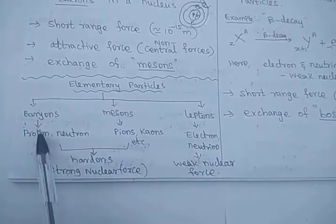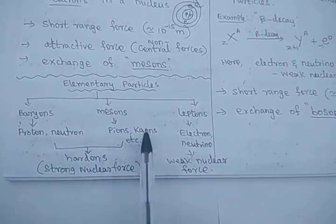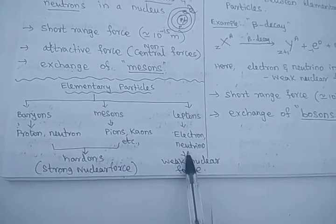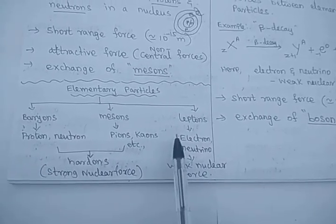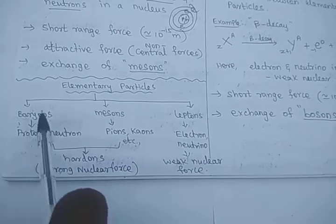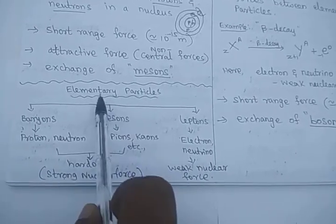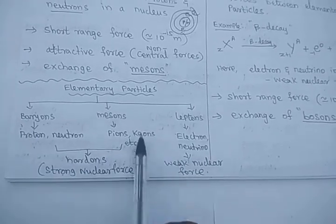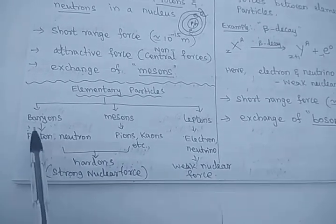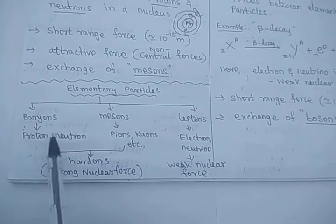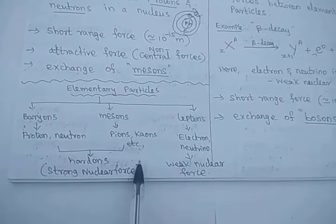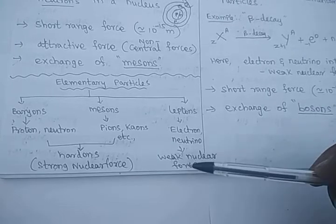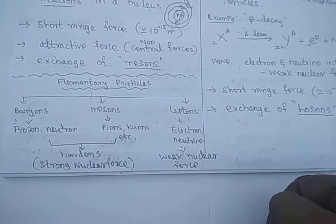All particles — proton, neutron, pions, kaons, electron, neutrino, antineutrino — there are numerous particles available. These are all called elementary particles. We classify elementary particles based on their behaviors. Proton, neutron, pions, and kaons obey the strong nuclear force, while leptons — that is, electrons and neutrinos — obey the weak nuclear force.